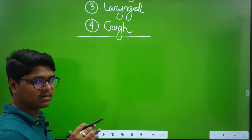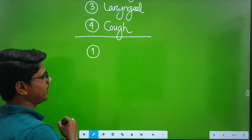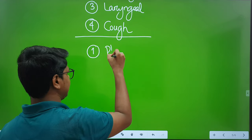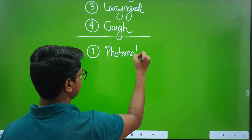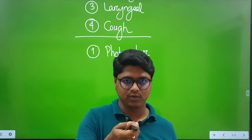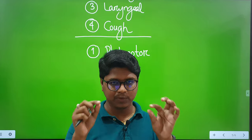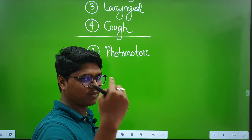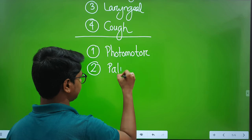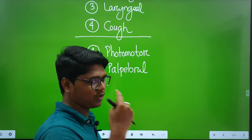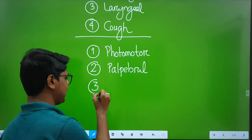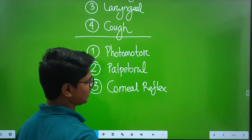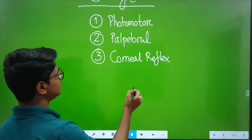Next come the ocular reflexes. First, you switch on your torch and point it towards the eye — this is known as the photomotor reflex. When you point your torch to the eye, the pupil will constrict because too much light causes constriction to reduce the inflow of light. Next comes the palpebral reflex — when you touch the eyelid (palpebra), you will find the palpebral reflex. Then after palpebra comes the corneal reflex — when you touch the cornea, the animal will try to close the eye.